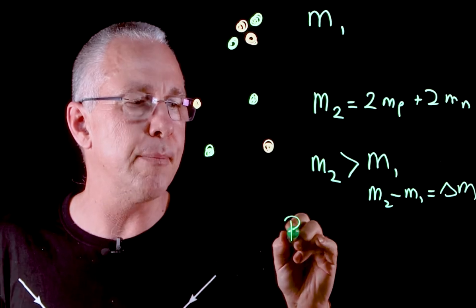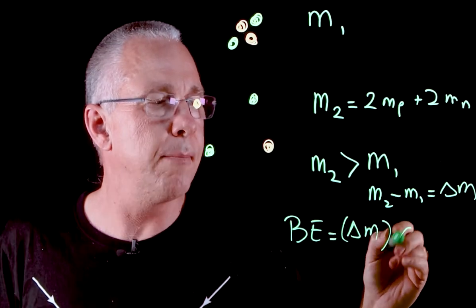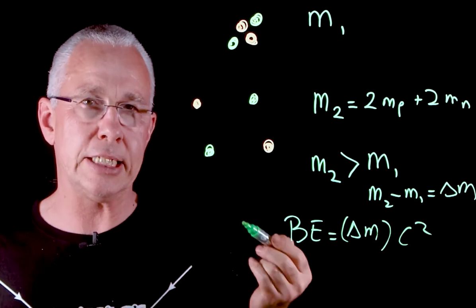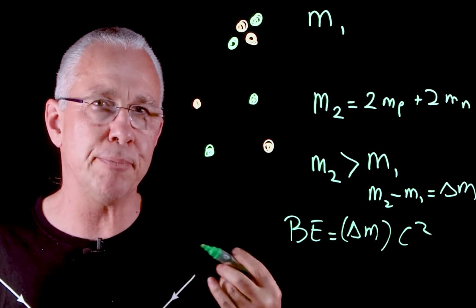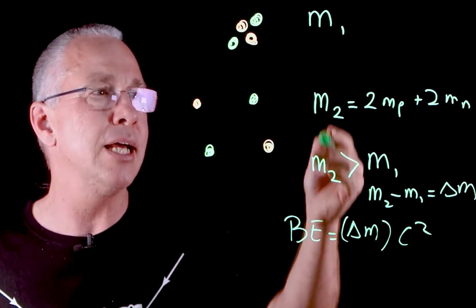The idea of the binding energy is simply that mass defect multiplied by c squared. So that's the energy I put in to break it up into its parts. It's converted into mass, and that's the result.